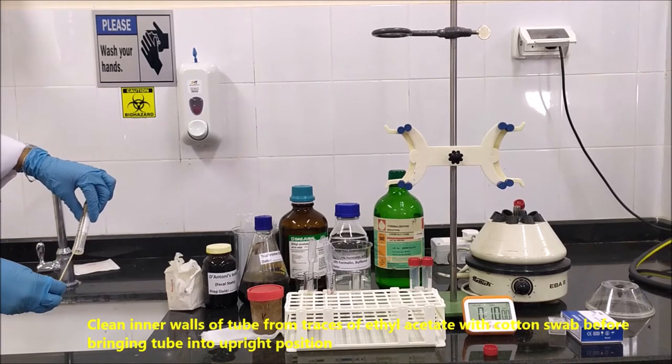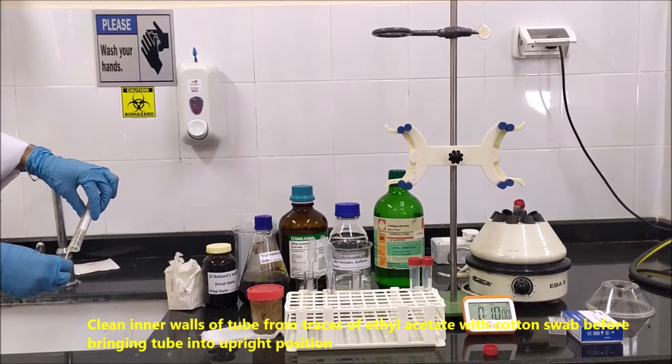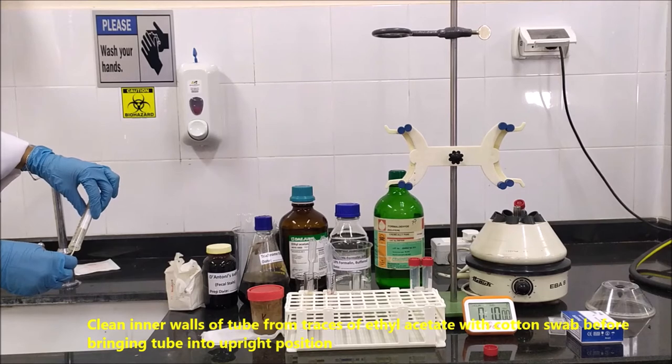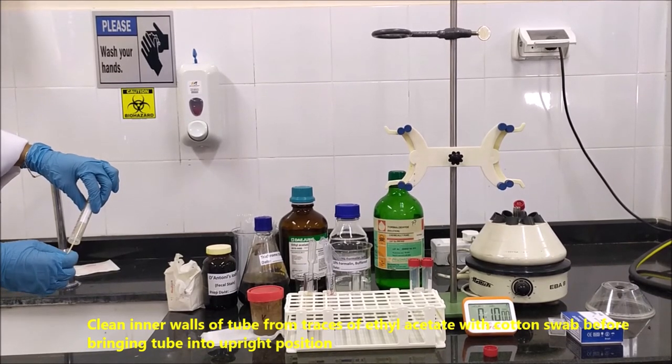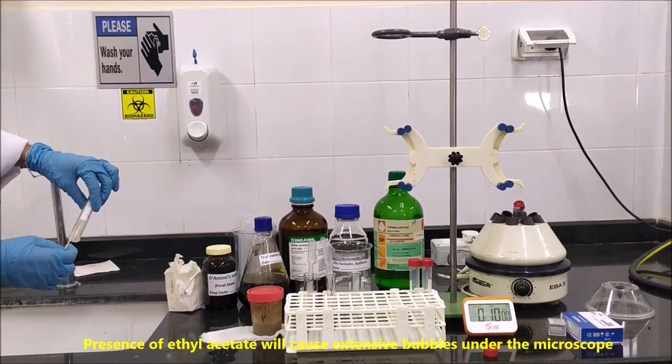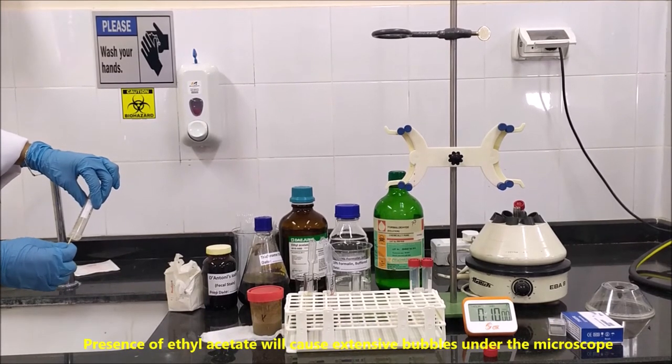Clean inner walls of tube from traces of ethyl acetate with a cotton swab before bringing tube into upright position. Presence of ethyl acetate will cause extensive bubbles under the microscope.